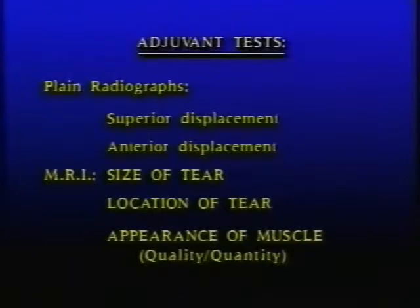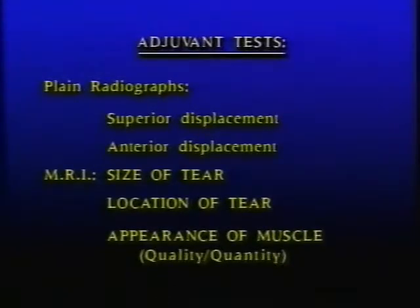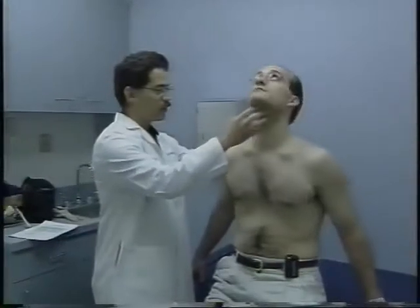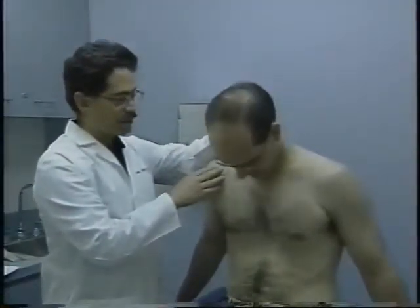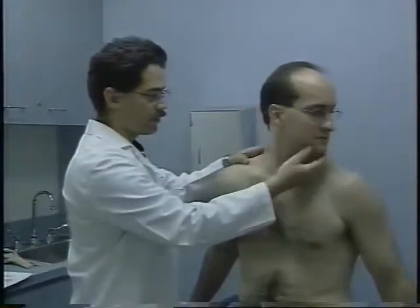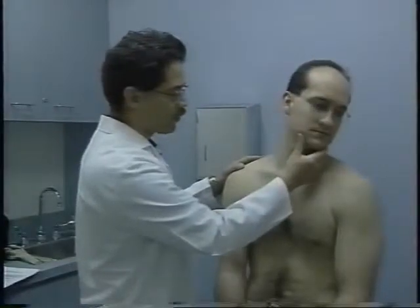Adjuvant imaging studies are very helpful after an accurate clinical examination. Plain radiographs can demonstrate superior or anterior displacement associated with a large anterior superior rotator cuff tear, and MRI gives information not only about the size and location of the tear, but also the quality and quantity of the muscle. All patients suspected of having rotator cuff disease should have an adequate examination of the cervical spine assessing range of motion in all directions. The Spurling's maneuver elicits pain from compression of the nerve root, referred over the trapezius.